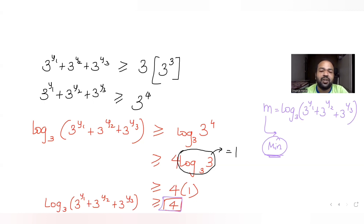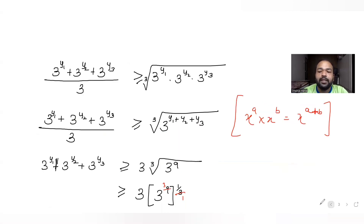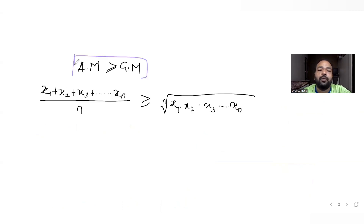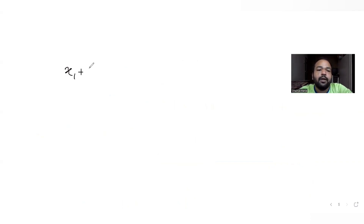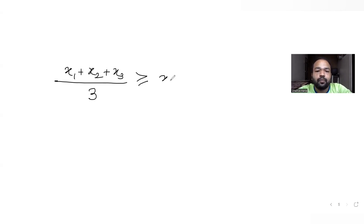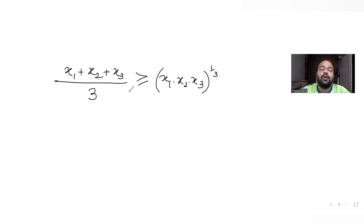Now let's solve for capital M, the maximum possible value of the log expression. Since x1, x2, x3 all appear inside logs, we apply AM ≥ GM to the terms x1, x2, x3 directly: (x1 + x2 + x3) / 3 ≥ (x1 · x2 · x3)^(1/3), which we can also write as raising to the power 1/3 instead of cube root.